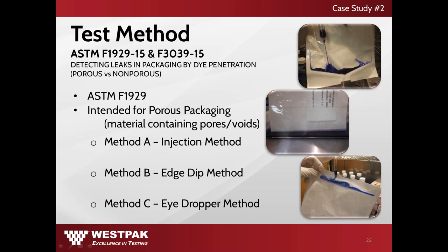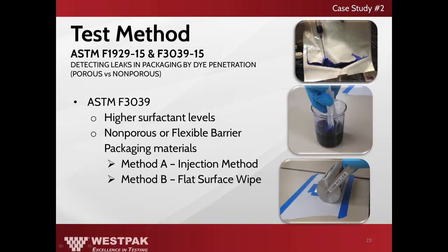Dye penetration for porous packaging is outlined in ASTM F1929. The three methods include method A, the injection method; method B, the edge dip method; and method C, the eyedropper method. For non-porous packaging such as foil and poly pouches, ASTM standard F3039 is referenced. For this test, the dye penetration solution is made with a higher surfactant level in order to indicate channel leaks. The two test methods included are method A, the injection method, and method B, the flat surface wipe method.